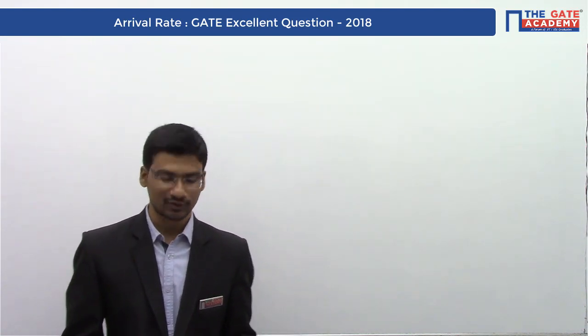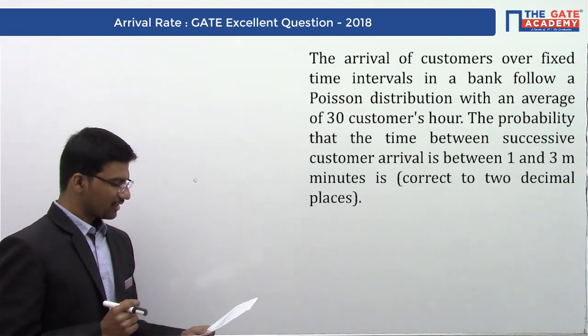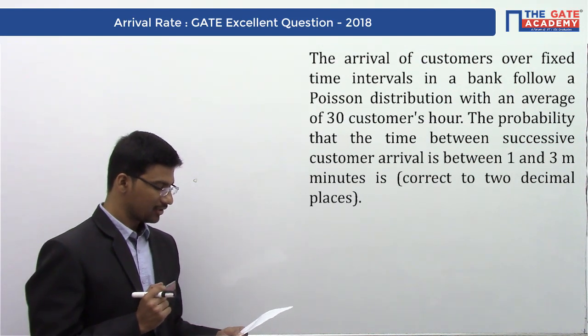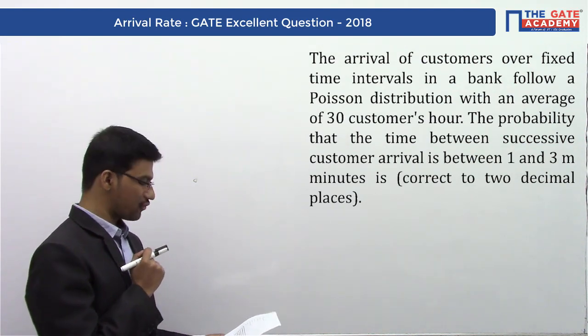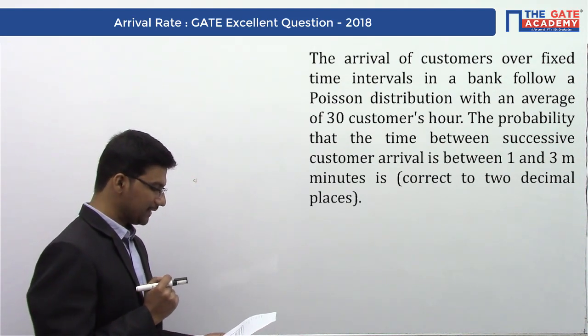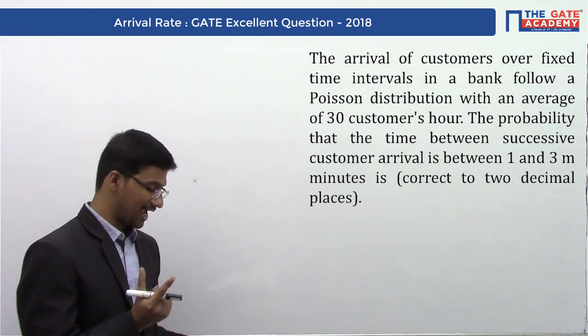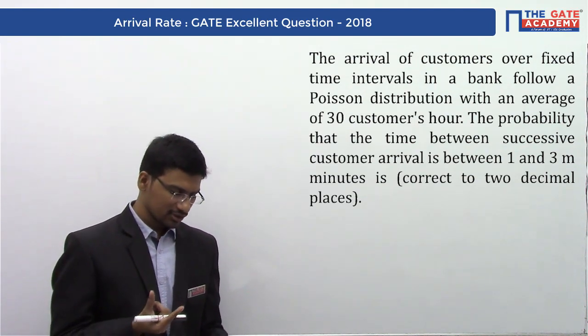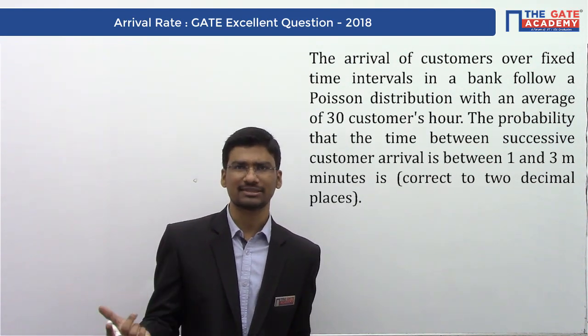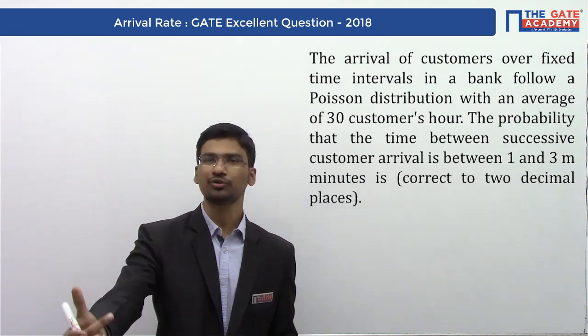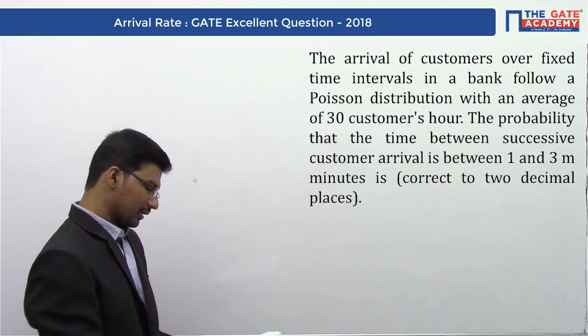Hello everyone, today we will discuss a question from the previous GATE examination. This question has been asked from the subject Industrial Engineering and the chapter is Queuing Theory. It was asked in GATE 2018. It is a numerical answer type question, so we have to write the correct answer up to two decimal places.